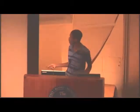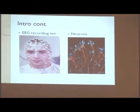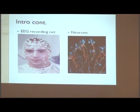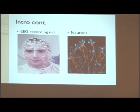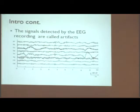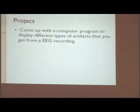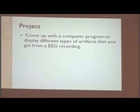Neurons are cells that send signals around the body and the brain. This is an EEG recording net that you see on the back — those are neurons. The signals detected by EEG recordings are called artifacts. My project was to come up with a computer program to display different types of artifacts that you get from an EEG recording.